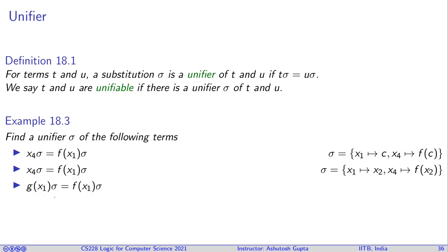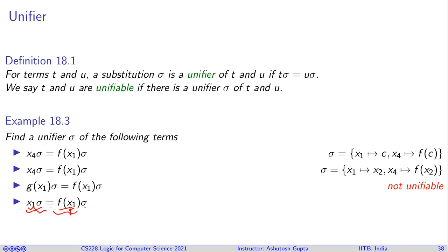Sometimes you cannot unify terms at all. For example, if the top-level symbols are different, there is no way to make them equal. Another example where unification fails is when you have x1 needing to be mapped by sigma and f(x1) mapped by sigma. Since x1 appears inside f(x1), both terms cannot be of equal size — if x1 is replaced by another term, that same term will show up as a subterm of f(x1), so they can never be equal. There is no way to unify them.